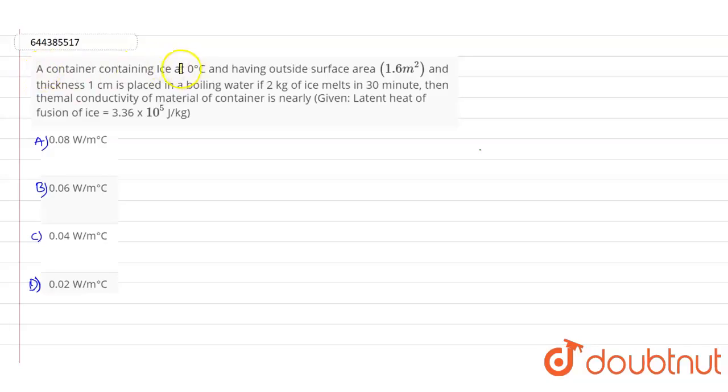So guys, in this question it is given that a container containing ice at zero degrees Celsius and having outside surface area as 1.6 meter square and thickness is one centimeter is placed in boiling water. If two kilograms of ice melts in 30 minutes...